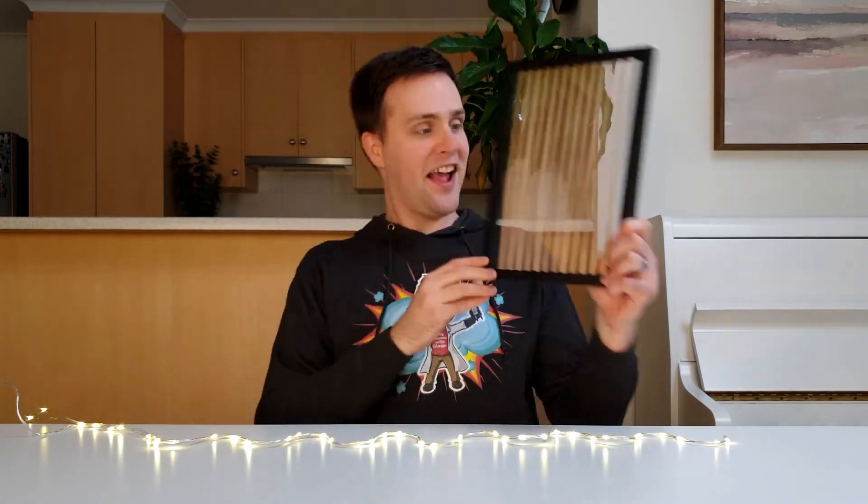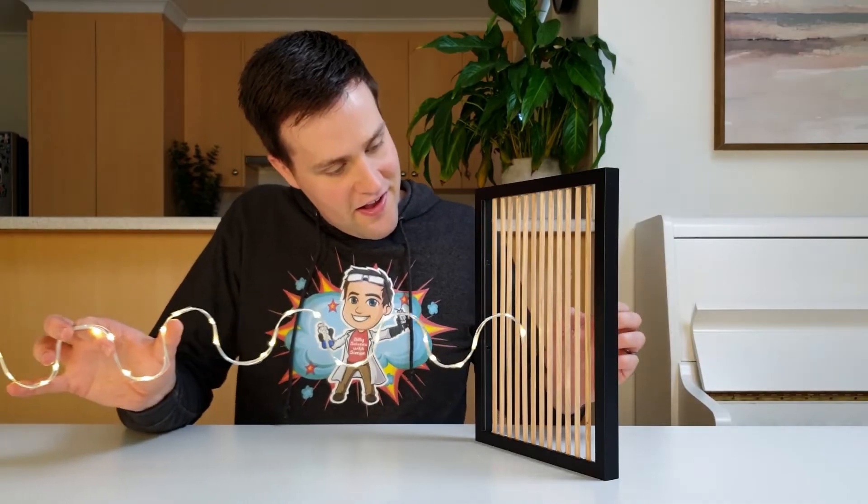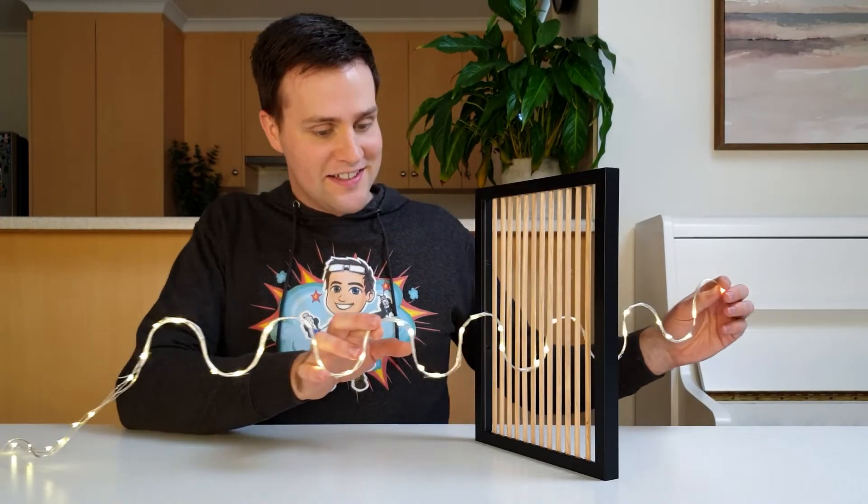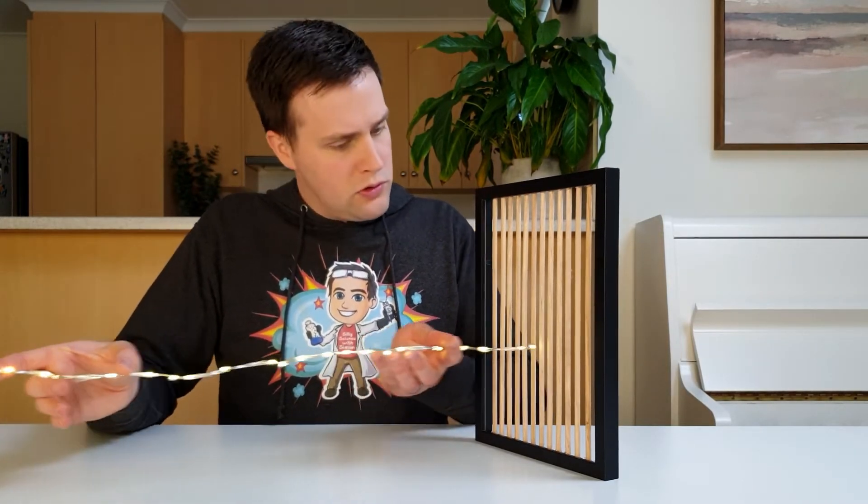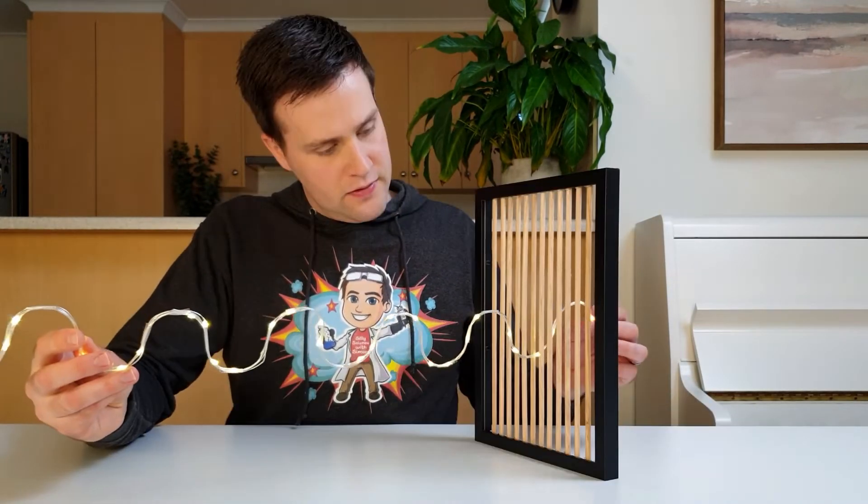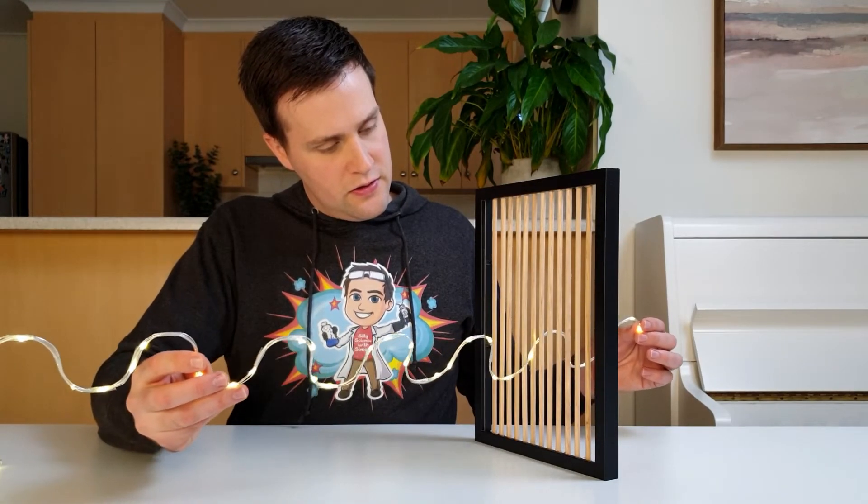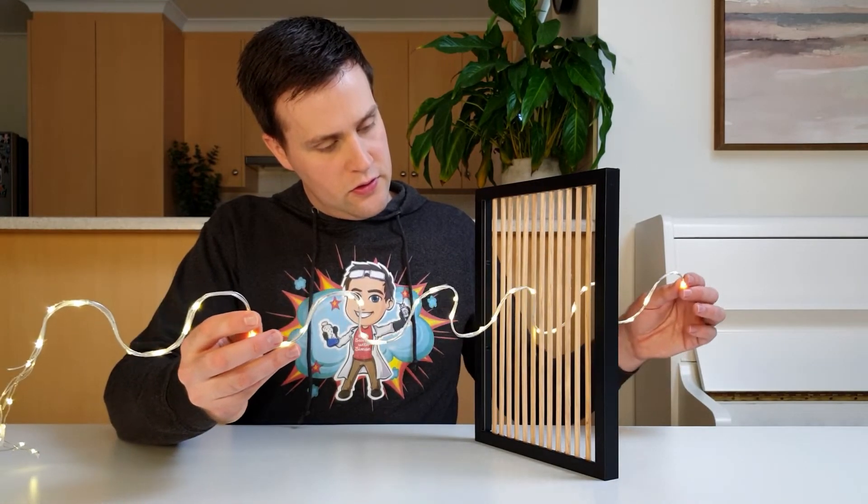But there is a way to get waves that only move up and down, by using a polarizer. A polarizer is a bit like this grate. If a wave is moving up and down, it's able to pass through the grate. But if the wave is moving from side to side, it can't pass through the grate. If the wave is moving somewhere in between, then only the up and down part will get through the grate.